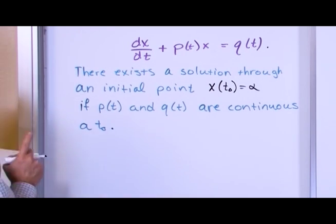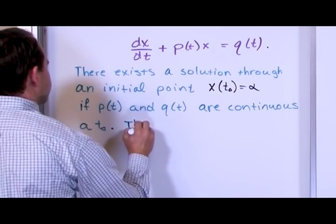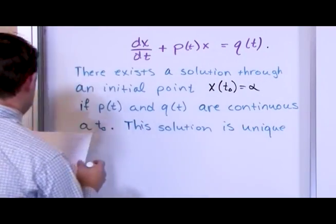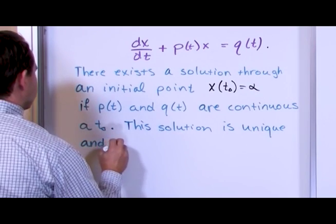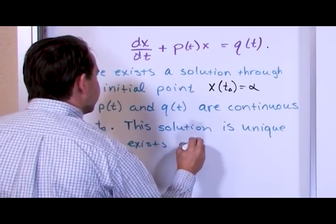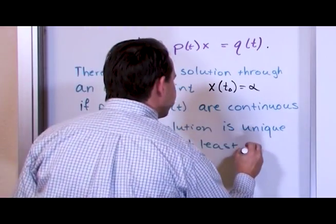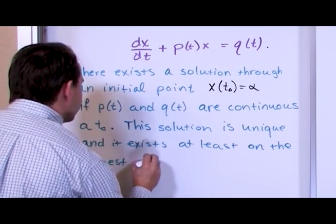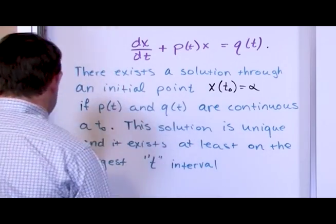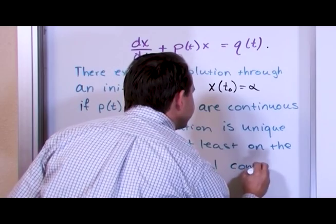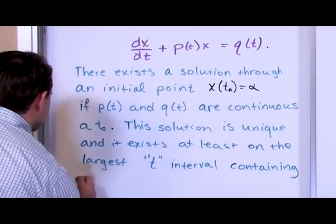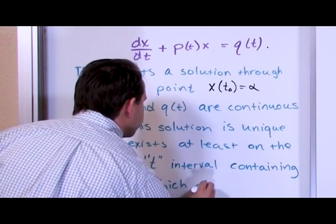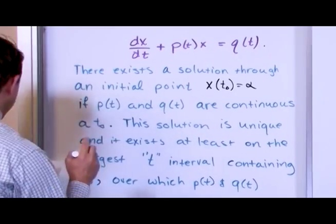That's the punchline, but the theorem goes on to say a little bit more. This solution is unique, and it exists at least on the largest t-interval containing t-naught over which p of t and q of t are continuous. And that's it.